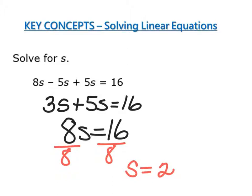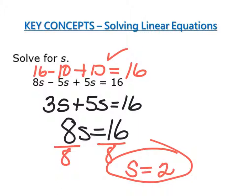If I multiply them both by 2, I have 16 minus 10 plus 10 equals 16. Well, 10 minus 10 is 0, and 0 plus 16 is 16. So we've done that right, so we know s equals 2 is also correct.